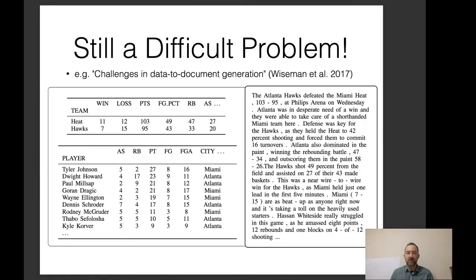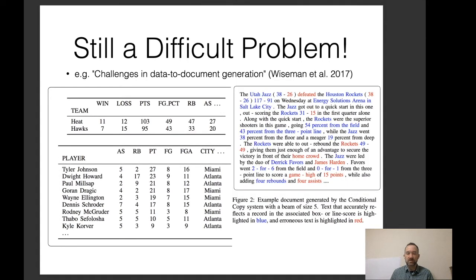This is still a difficult problem for data-driven methods. For example, with a basketball box score on the left — containing the game score and which players scored how many points — if we feed this into a neural model, it generates output where a large portion of the information is factually incorrect, like the team records being wrong. This is also interesting from an evaluation perspective: how do we evaluate factuality? That's the first step to fixing it, and there's been some work in this area.